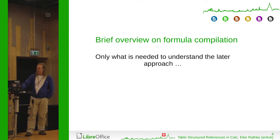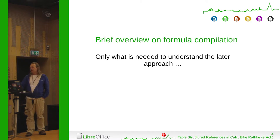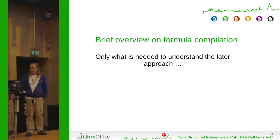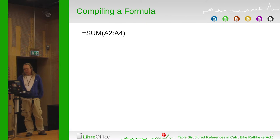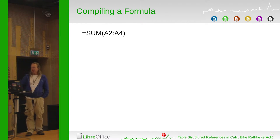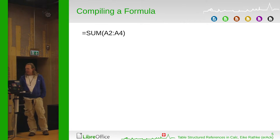I'll start with a short introduction to the formula compilation — what happens when you enter text to produce the code that the interpreter can read. For a very simple example, we have a SUM of a range from A2 to A4, which is 3.0.